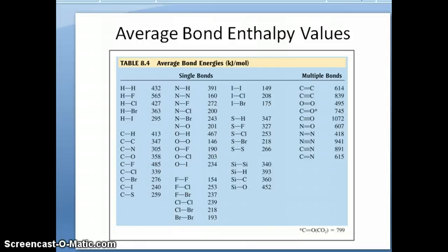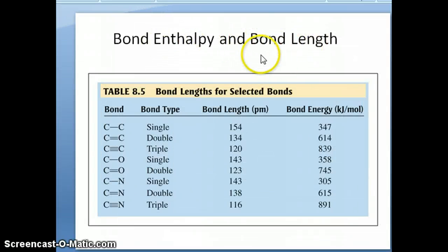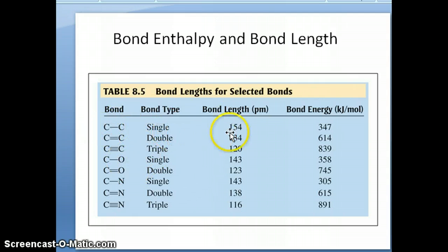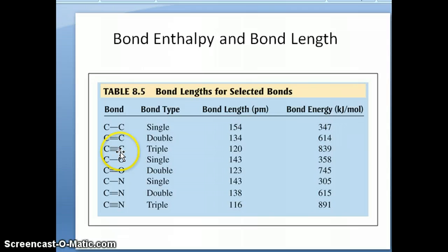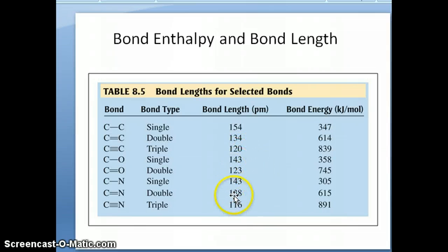Another relationship to point out is between bond enthalpy values and bond length. For the carbon-carbon single, double, and triple bonds, the bond length gets shorter and shorter. The single bond is the longest at 154 picometers, and the triple bond is only 120 picometers. This is because more electron density between the two nuclei — the electrons are negatively charged and the nuclei are positively charged — pulls the nuclei closer together, making the bond distance shorter. You see this with other examples of multiple bonds as well.